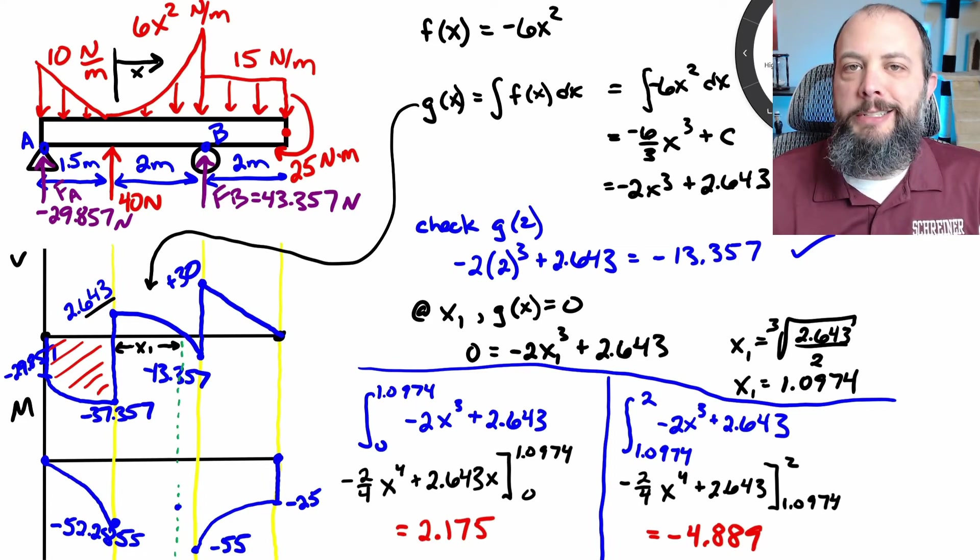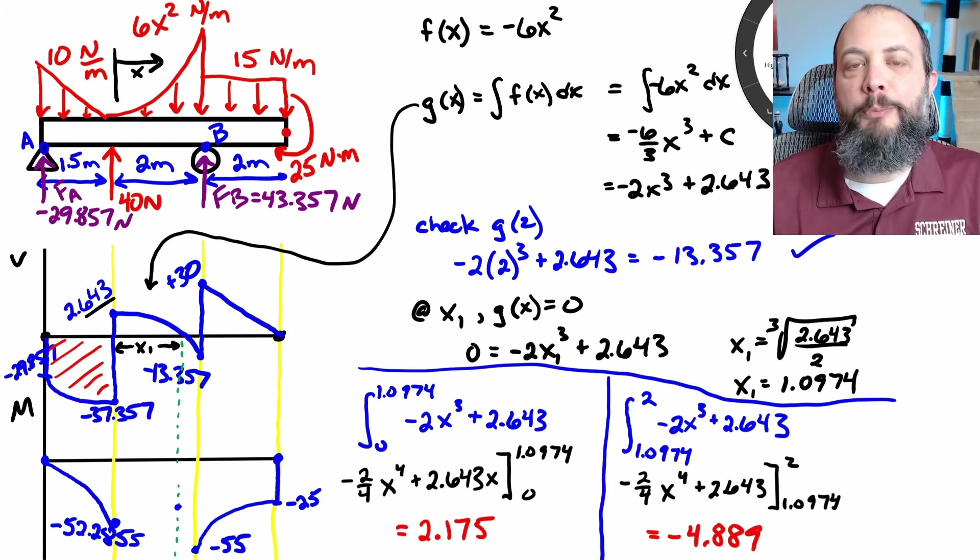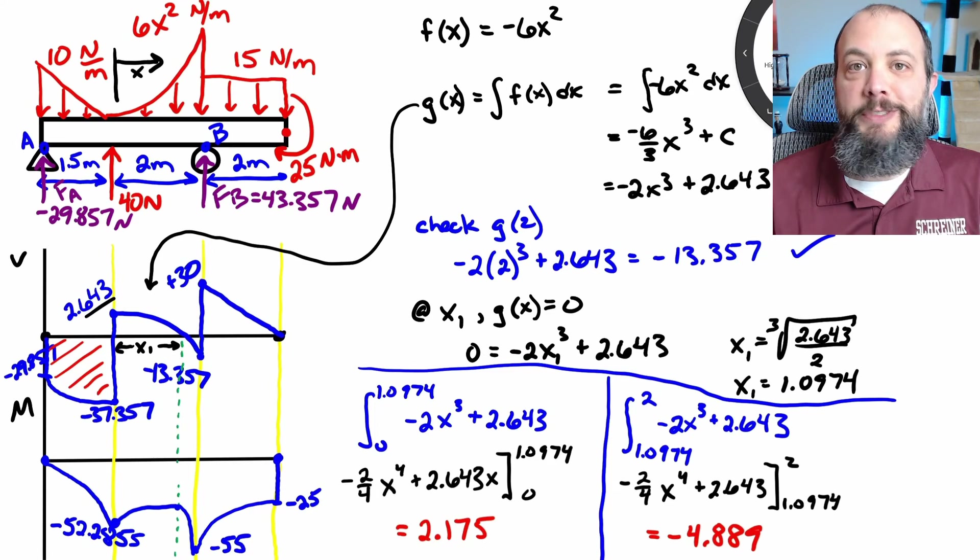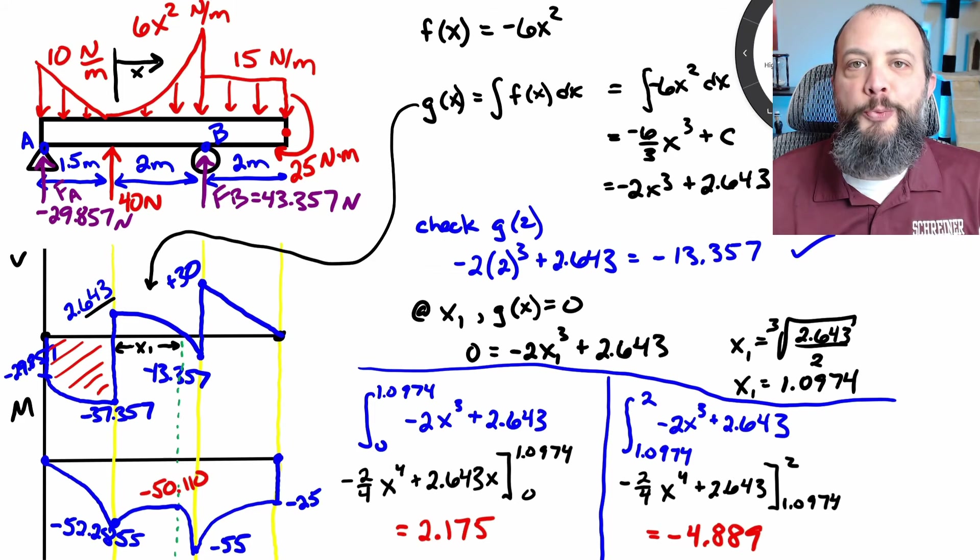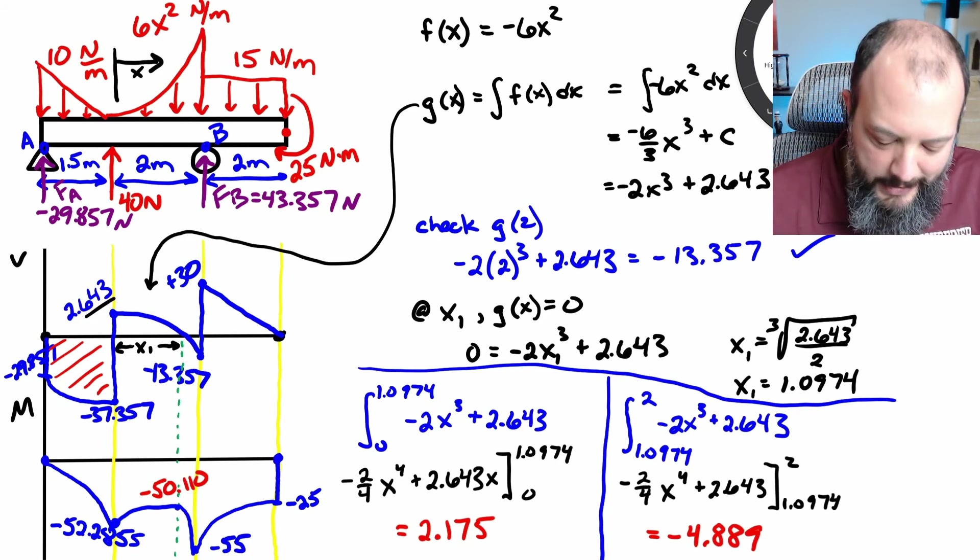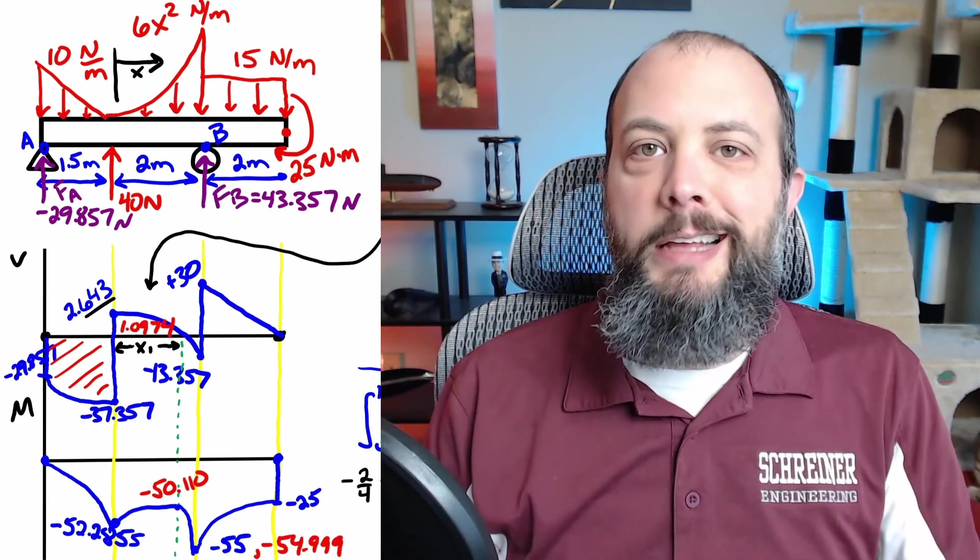So I've set up my two integrals, which will be the two areas, left of the green dashed line and right of the green dashed line. So completing those two integrals, I get an area of positive 2 on the left-hand side and negative 4.8 on the right-hand side. Now, hopefully, as I draw in this line on the moment diagram, as I add this 2.1 to the negative 52 and then subtract the 4.8, hopefully I should get to negative 55 on that right-hand point. If those two points don't meet, then it means I've made a math mistake somewhere. So I've drawn in the two curves. They're both concave down because they should have a slope of zero at the maximum and be steeper on the left and right-hand sides. So when adding the 2.175, I get a value of negative 50.110 at that maximum. And then when subtracting the 4.889, I get to a value of negative 54.999. And we'll say that's close enough. And that's it.